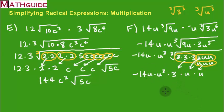So when I multiply 3 times negative 14, I'm going to get negative 42. How many u's do I have? u, u, u cubed times u, that's 6 u's all being multiplied together. And there's the final answer.